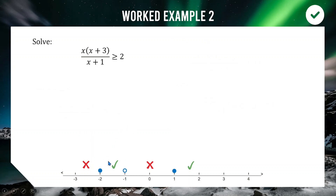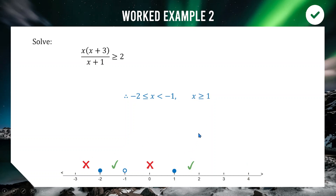Our solution is −2 ≤ x < −1 (including −2 but excluding −1) and x ≥ 1. Written formally: −2 ≤ x < −1, and x ≥ 1.